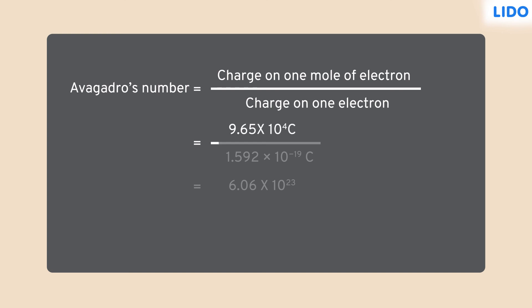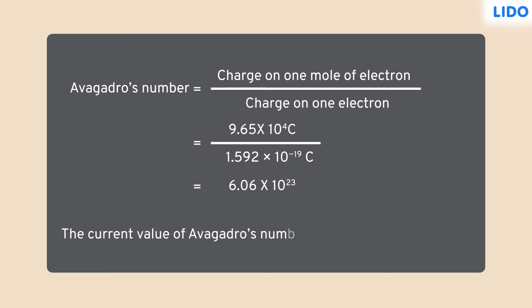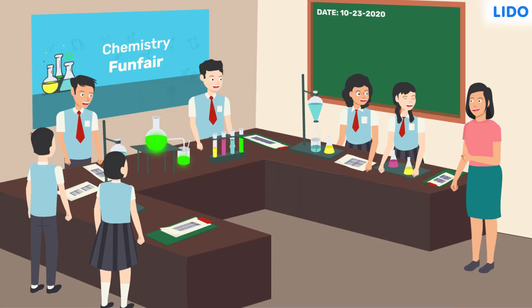Later, more experiments were done to find a more precise number. And this is how Avogadro's number was found even without counting the atoms. After hearing about Mole Day, students were even more excited to participate in the funfair. That's all for today. See you next time.